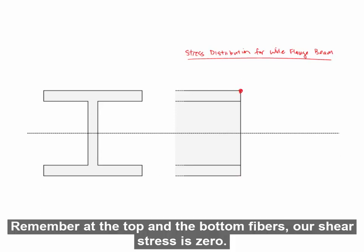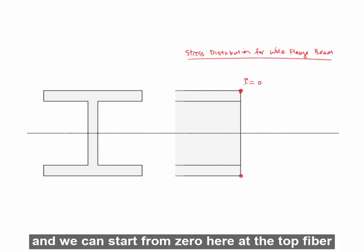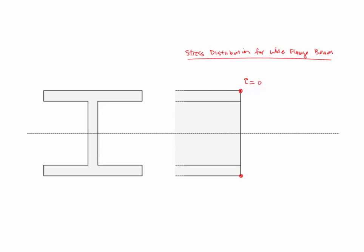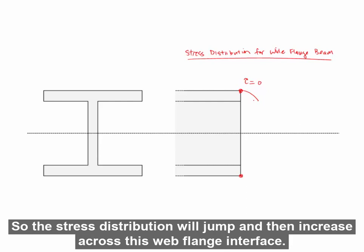Remember, at the top and the bottom fibers, our shear stress is zero. And we can start from zero here at the top fiber, and we know that the distribution is parabolic across the flange. We just learned that the web carries significantly more shear than the flanges, so the stress distribution will jump and increase across this web flange interface.